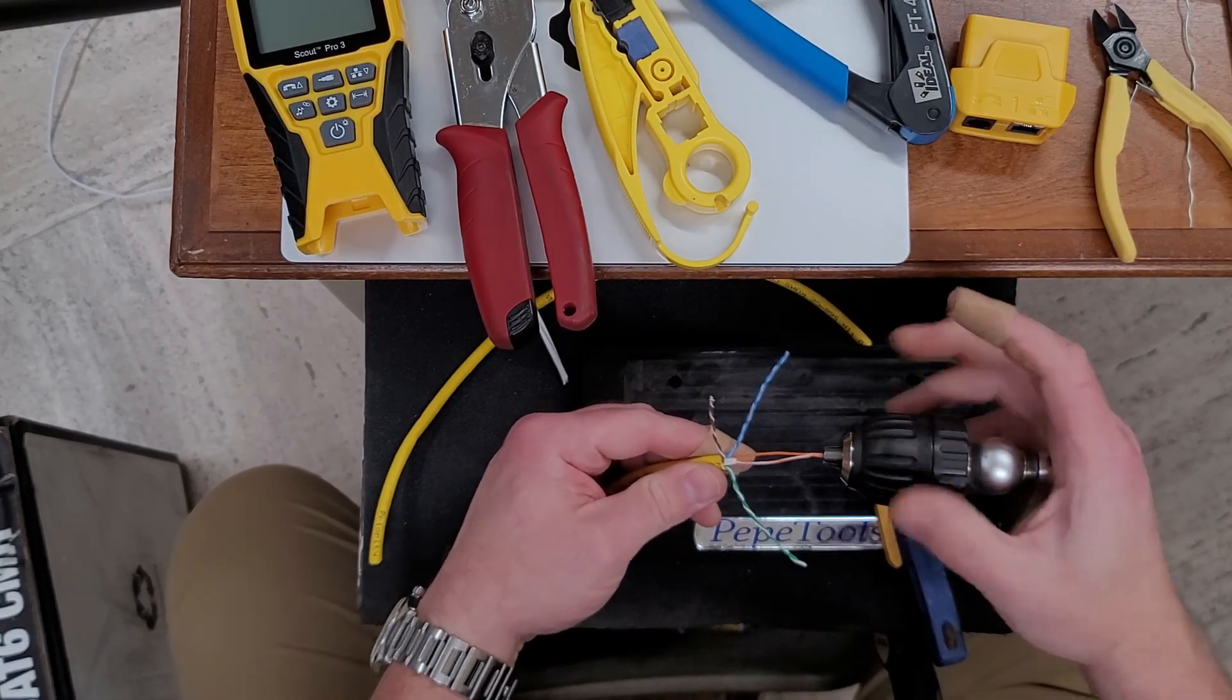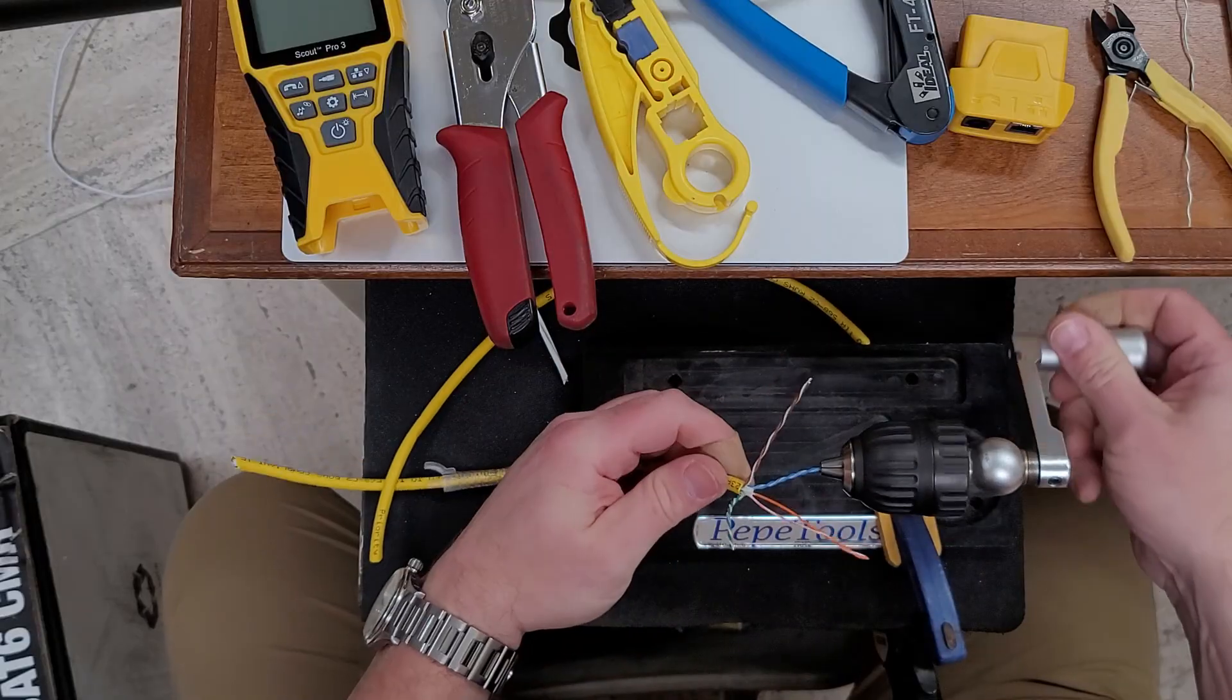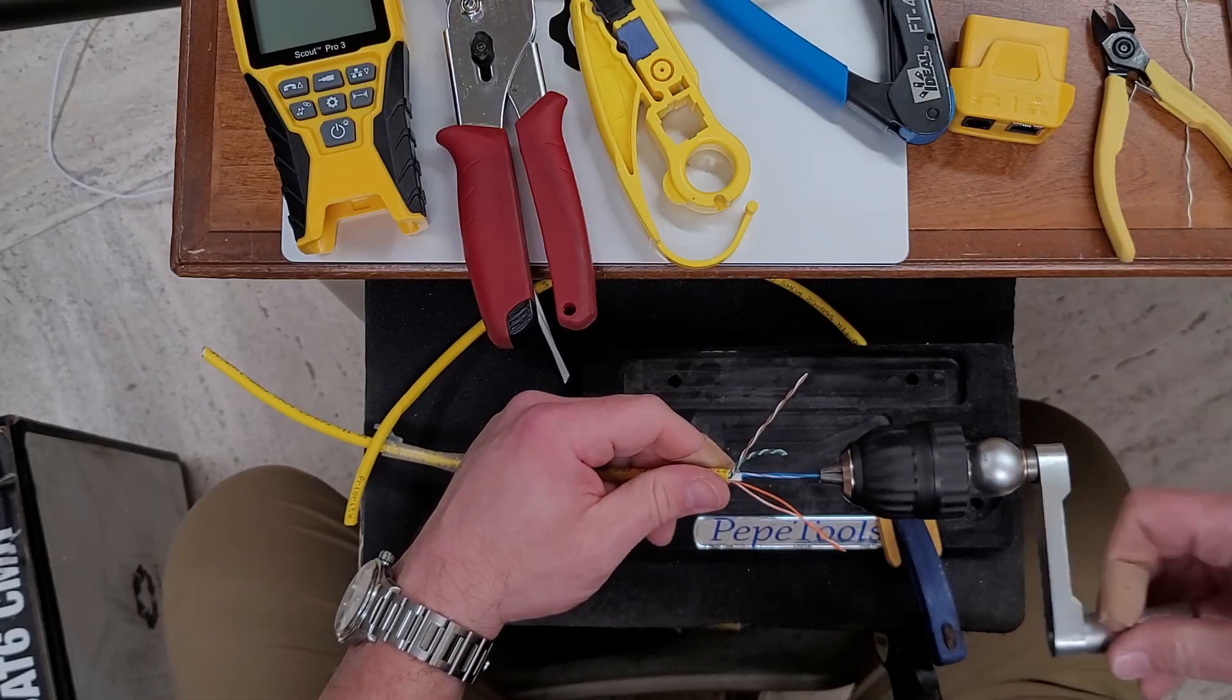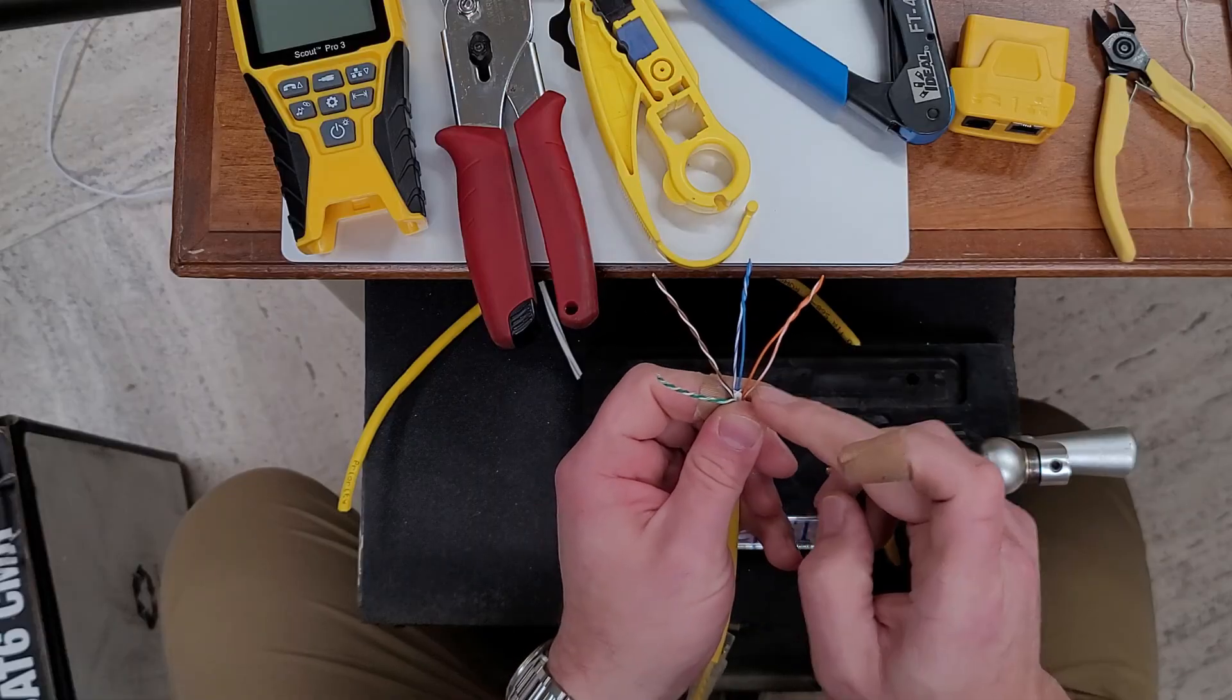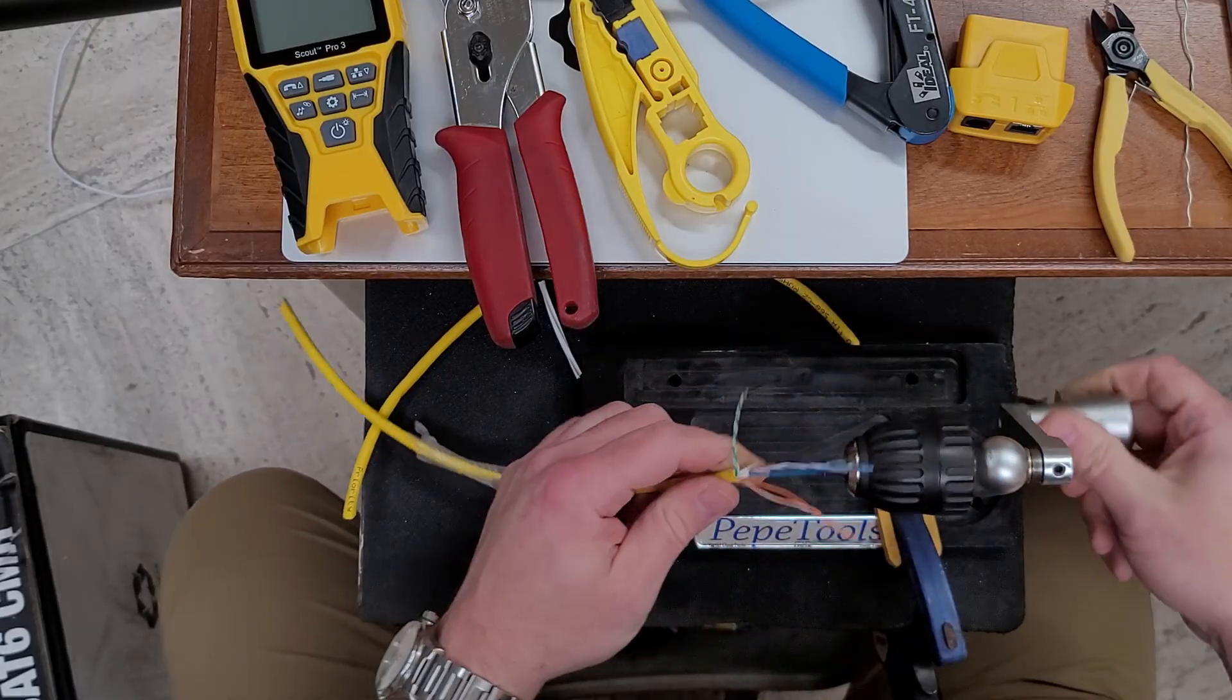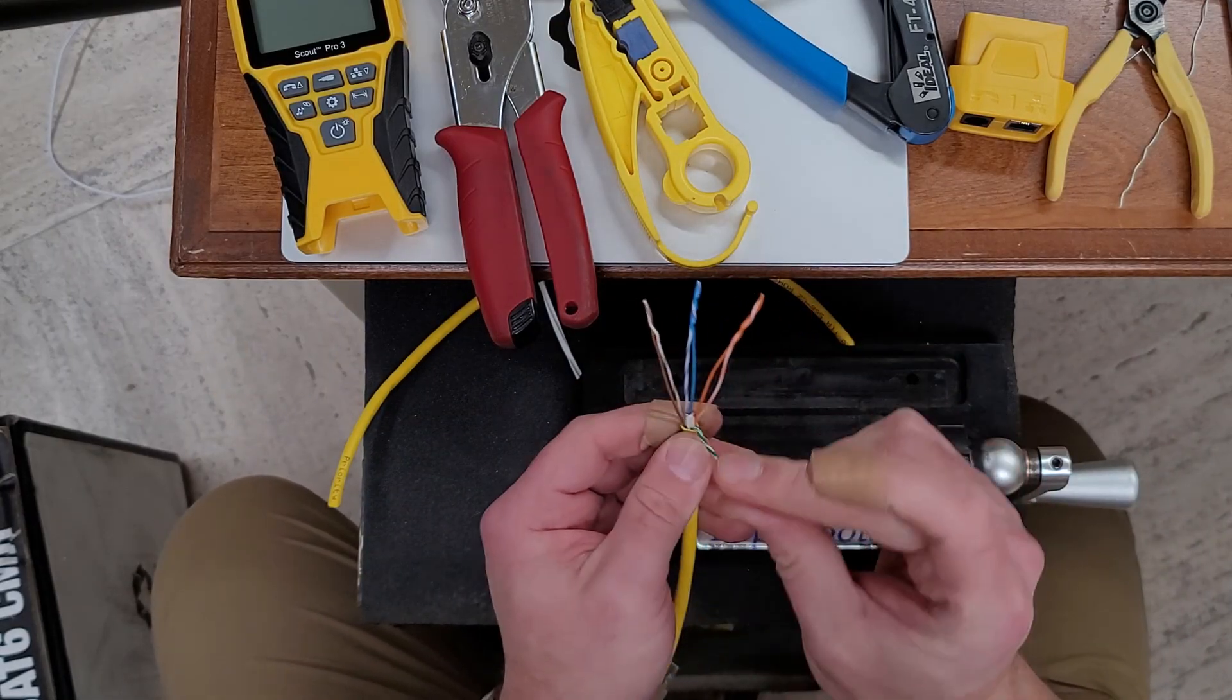For the blue we need the solid to be on the south and the stripe to be on the north. Lock this in and unwind it - it's going to naturally want to lay with the stripe on the south. Just undo it a little bit more so we're untwisting it in the jacket. For the brown you want the stripe to be on the south, which looks like it wants to lay naturally on the south.